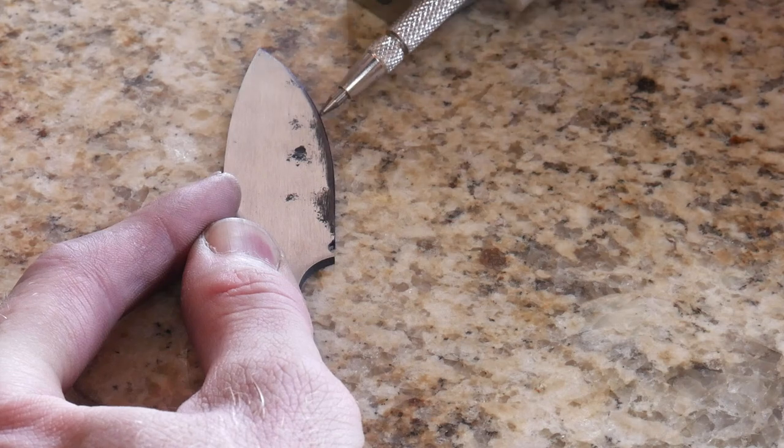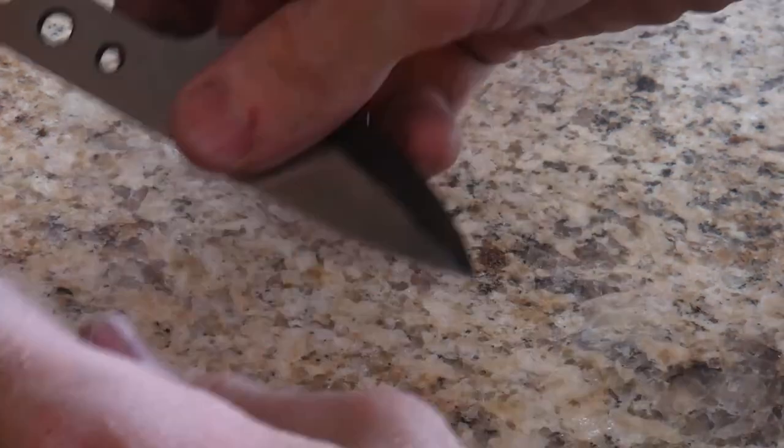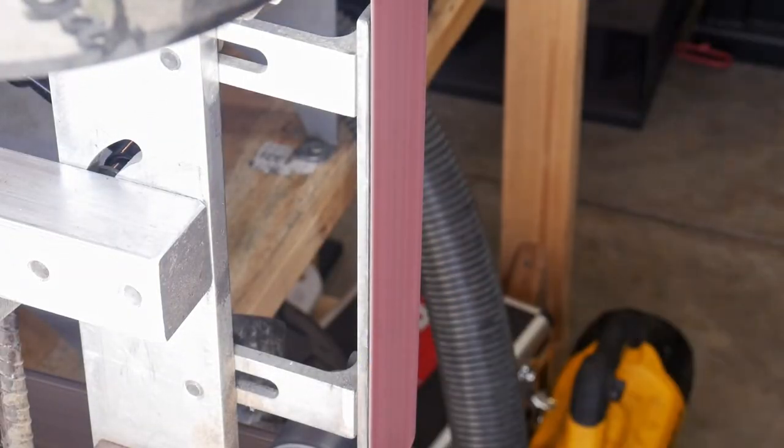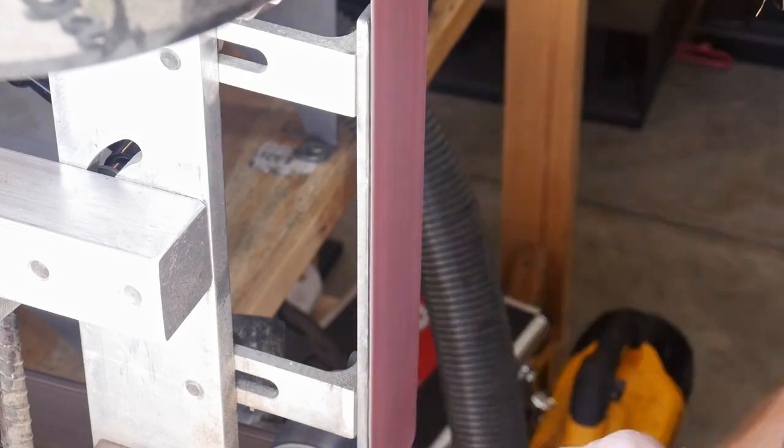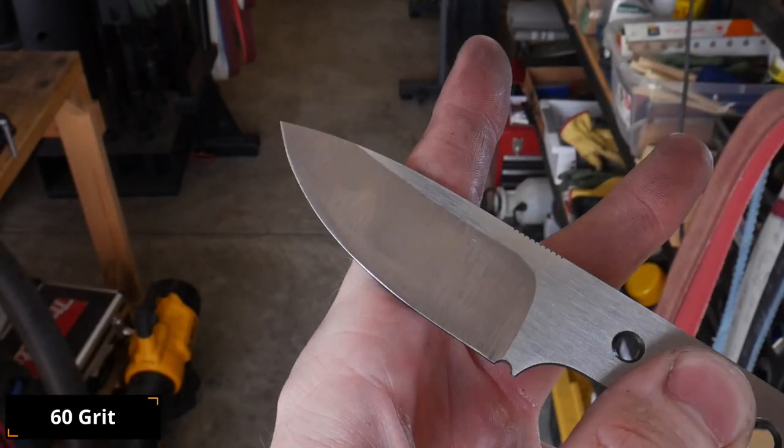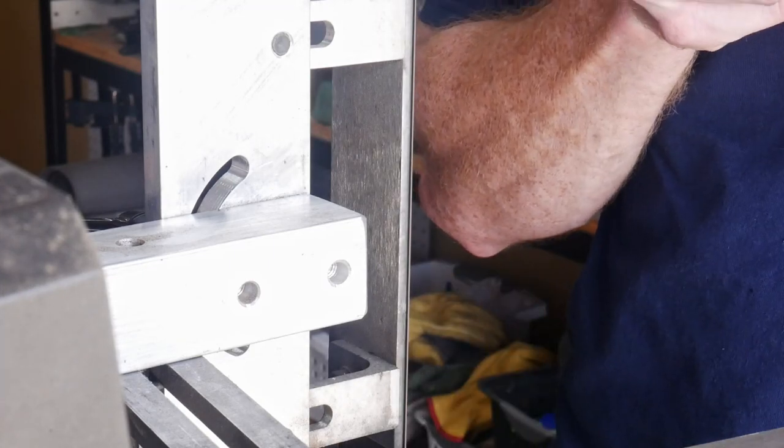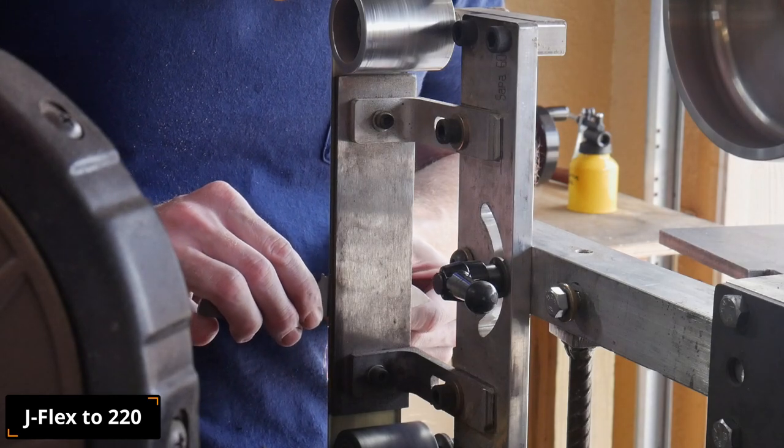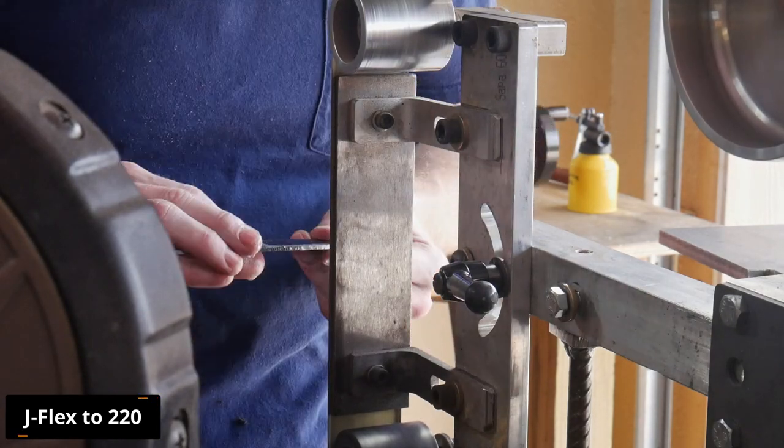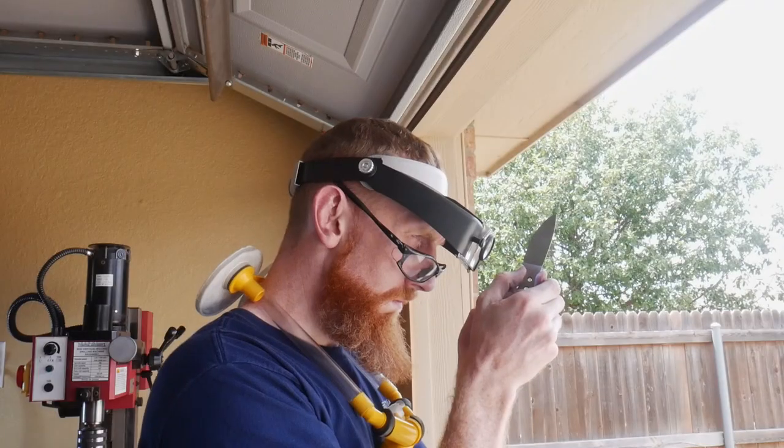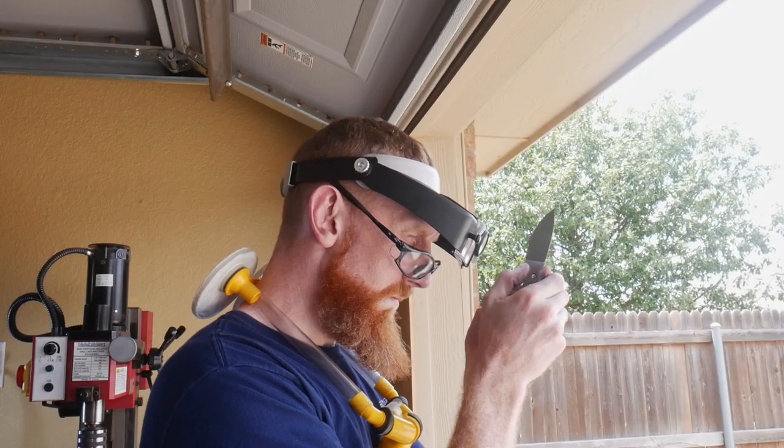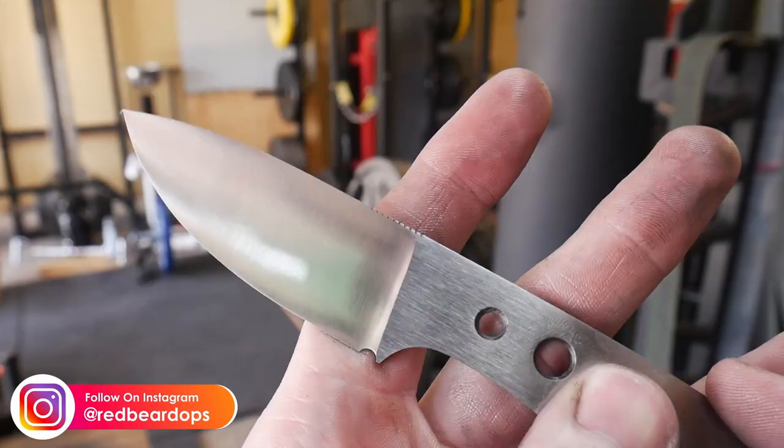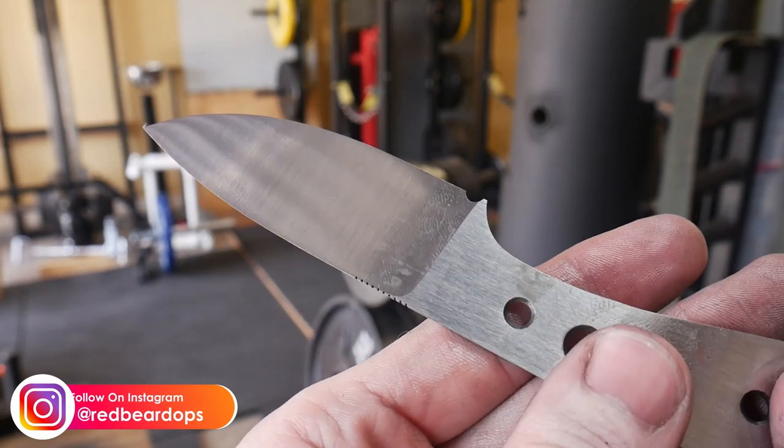Using my DIY height scribe, I scribe in two lines parallel to each other along the edge to give me a target to grind to. On forged items that have the bevel slightly forged in, using that height scribe is easier than using the centerline scribes. I start off with a 60 grit ceramic belt, then move from a 120 to a 220 J-flex belt to get my plunges dialed in and finish out my grind. That headset magnifier really came in handy trying to make sure my plunge lines were symmetrical.